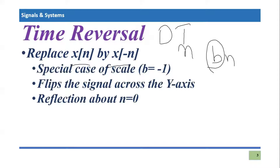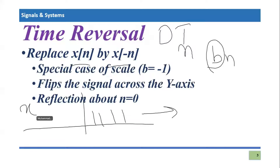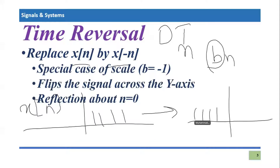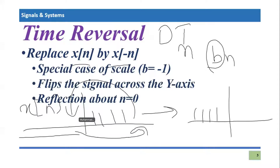There are two important points to understand about the effect of time reversal. A time reversal signal will flip the signal across the y-axis, or equivalently there will be a reflection of the original signal about n equals zero. For example, if your discrete time signal looks like this — x(n) — then the time reversed version will be like this. Whatever is present at negative n values will flip to positive values, and whatever is in the positive domain gets reflected into the negative domain. We'll see this in both mathematical and graphical form.